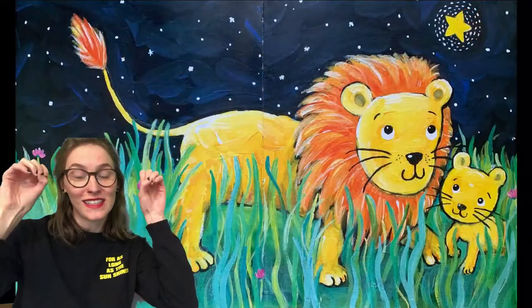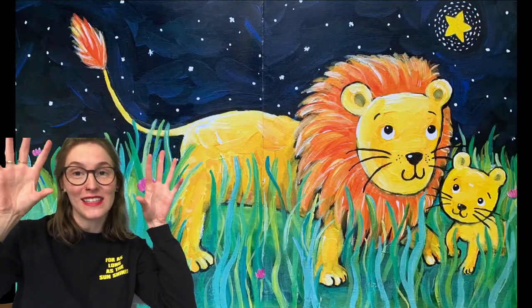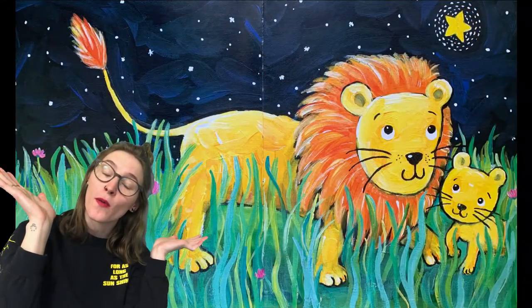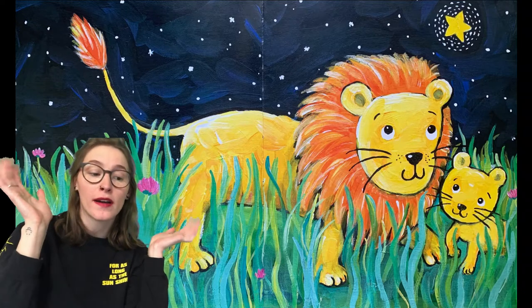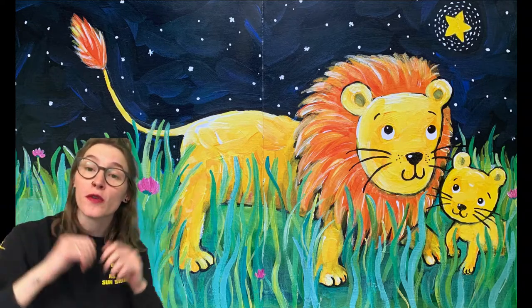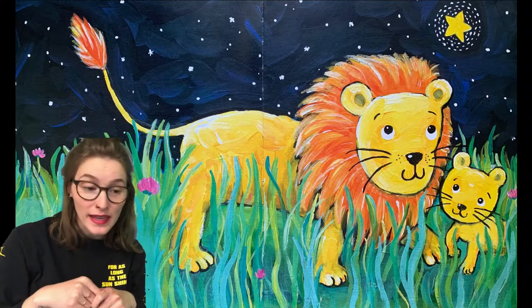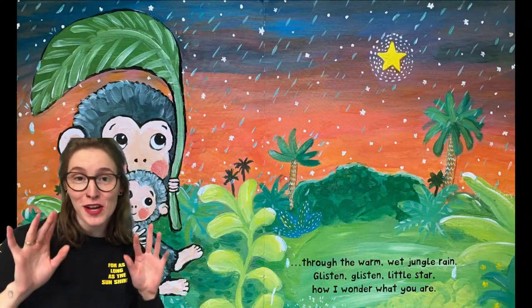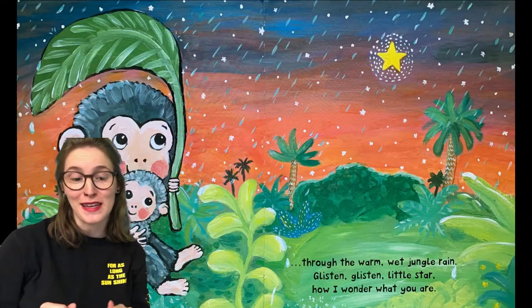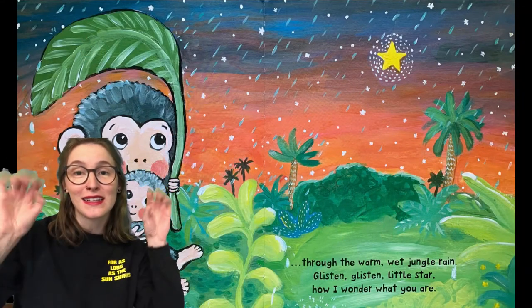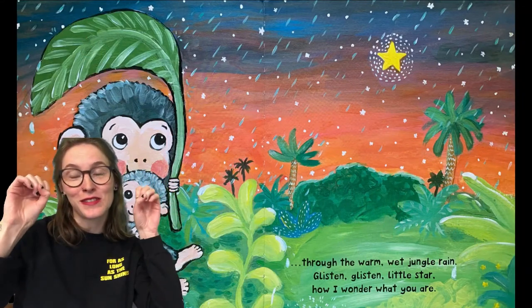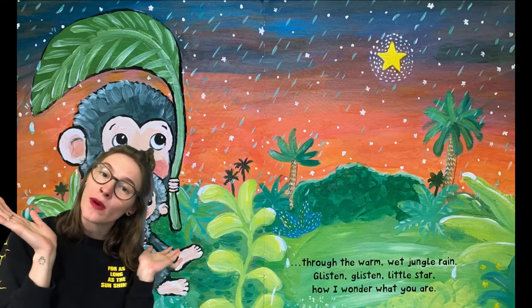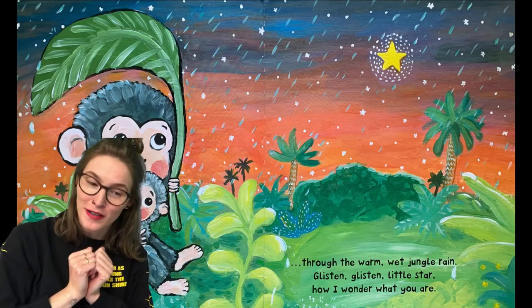Glisten, glisten, little star, how I wonder what you are. Up above the grassy plain, through the warm, wet jungle rain. Glisten, glisten, little star, how I wonder what you are.